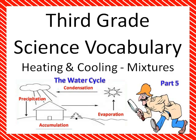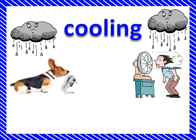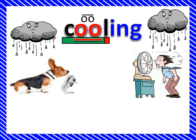These are third grade science vocabulary words under the heading of heating and cooling and mixtures. Here are the four steps in the water cycle: the sun comes out and heats up the water, the water evaporates into the air, then it condensates inside the cloud, then it precipitates as rain, and then it accumulates on the ground. That's the water cycle.